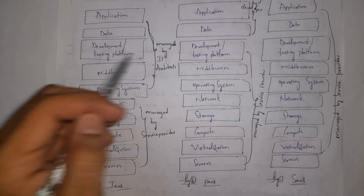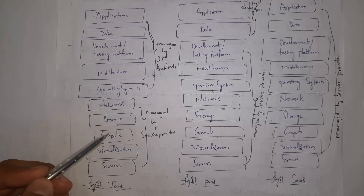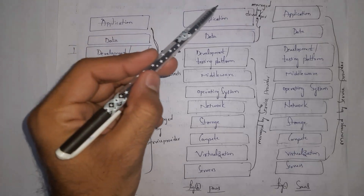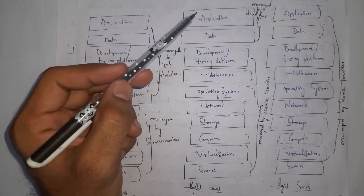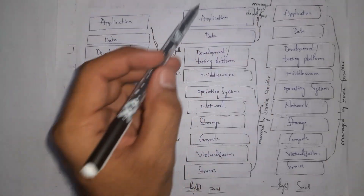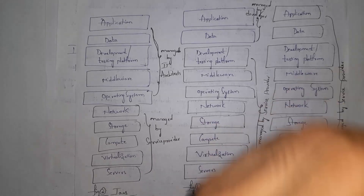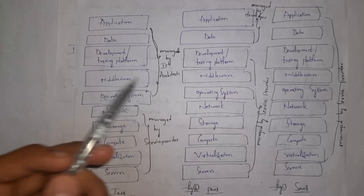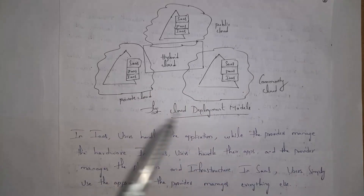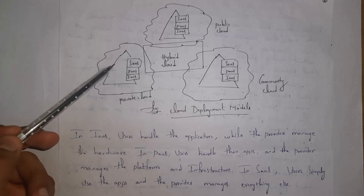In IaaS, the application, software development and testing tools, middleware, and operating system are all installed and managed by IT architects, while network, storage, compute, virtualization, and servers are provided by cloud service providers. In PaaS, application and data are managed by developers while everything else is managed by cloud service providers. In SaaS, everything — including the software — is managed by cloud service providers. All deployment models — public, private, community, and hybrid cloud — can provide IaaS, PaaS, and SaaS.